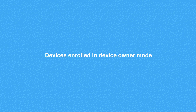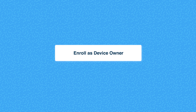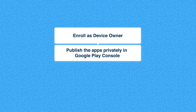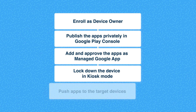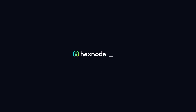For Android Enterprise enabled devices, silent app installation in kiosk mode is possible for devices enrolled as device owner. To do this, firstly enroll as device owner. Then publish the apps to be installed silently as a private app in Google Play Console, followed by approving and adding the app as a managed Google app. Then you can lock down your device into kiosk mode and push the apps to the target devices.